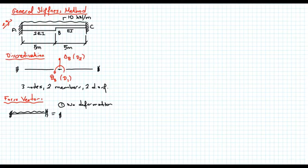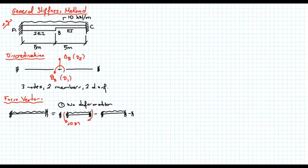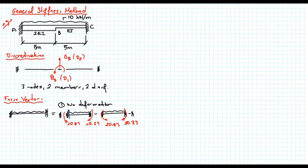For member AB and member BC, let's show the forces. I have a member load of 10 kN/m on each. When we calculate the fixed-end moments, this one is 20.83 kN·m, and I get the same fixed-end moments on the other side. Now let's calculate the shear forces — here it's 25 kN, and the same on the other side. These are the forces when there are no deformations.